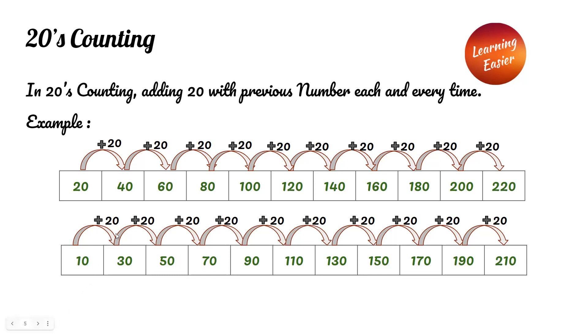Ten plus twenty equals thirty, thirty plus twenty equals fifty, fifty plus twenty equals seventy, seventy plus twenty equals ninety, and so on.